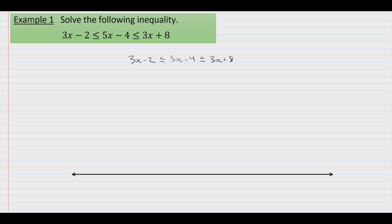To do that, we need to take away 3x. If you take away 3x from, for example, the right side, it will eliminate that term. But you also have to take it away from the other sides, that is the center and the left side. Doing that will leave us with negative 2 on the left, 2x minus 4 in the middle, and 8 on the right.